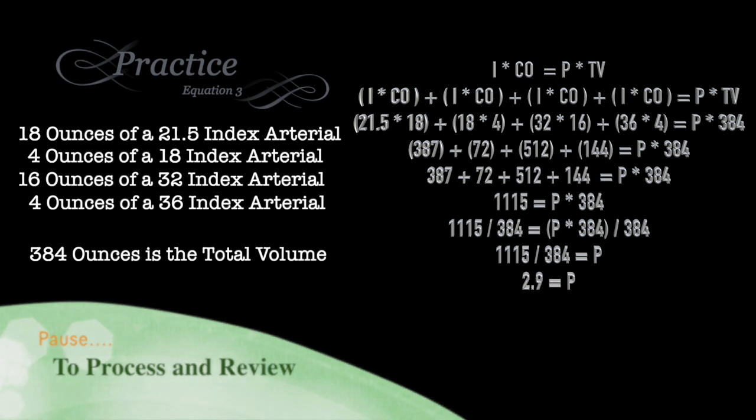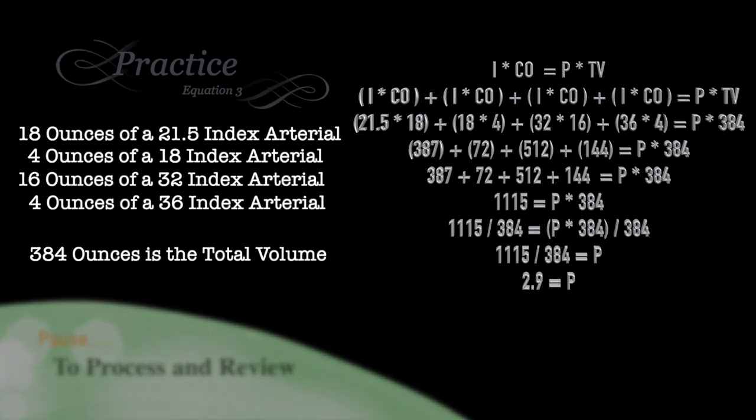We need to remove the total volume from the right side so that we can isolate P. In order to do that, we divide 384 by both sides. That cancels out the 384 on the right side, isolating P. And that gives us 1,115 divided by 384.